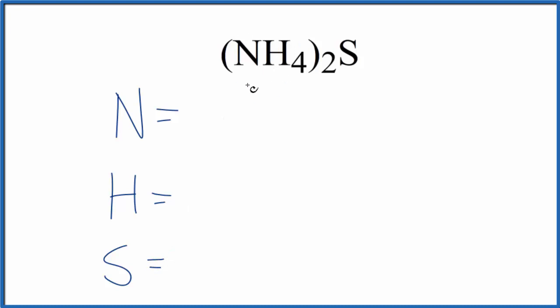For the nitrogen, there's nothing written after. We assume there's a 1 here. In this 2, it goes to everything in the parentheses. So 2 times 1, that's 2. 2 times 4, that gives us 8 hydrogen atoms. The sulfur, that little 1 there, we have 1 sulfur atom.